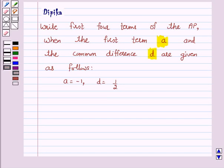Hi and welcome to the session. I am Deepika here. Let's discuss the question which says write first four terms of the AP when the first term a and the common difference d are given as follows: a = -1 and d = 1/2.